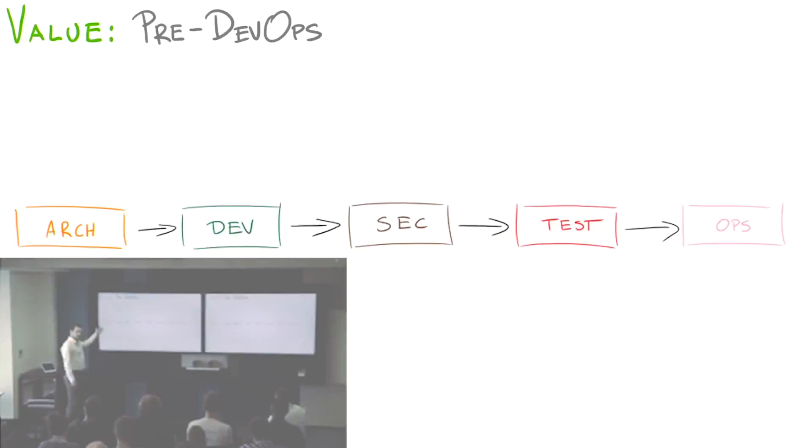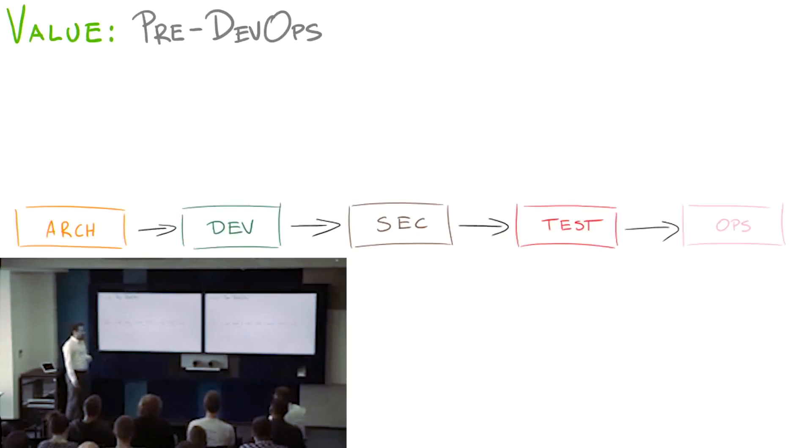There's a team of architects and they prepare the architecture. Then they pass it to the development team full of developers. They make it happen. Then they pass it to the security team, they make it secure. Then it's being tested and pushed to the operation teams that push it to production.